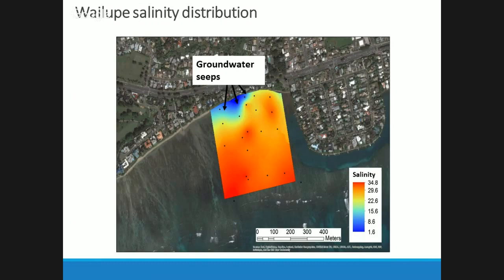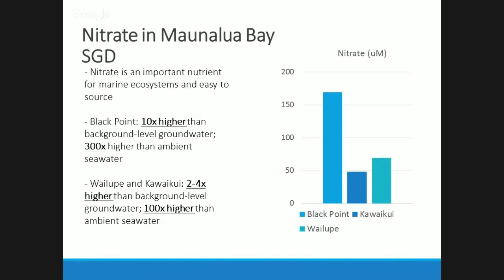During the salinity surveys we also took measurements for nitrate. Nitrate is really important for coastal ecosystems — it's biologically limiting, so productivity in the ocean depends on it. When you get high levels in a place like Hawaii where waters are typically oligotrophic, it can lead to algal blooms, eutrophication, and things very harmful for coral reefs. Scientifically, it's also easier to source where the nitrate is coming from, using a method I'll talk about shortly.